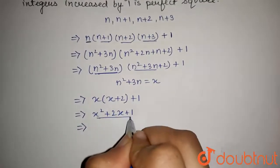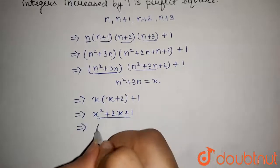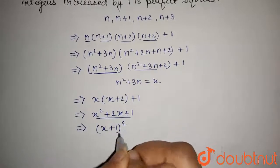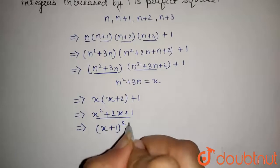Now, this x square plus 2x plus 1 is the square of x plus 1. So, this can be written as x plus 1 to the whole square.